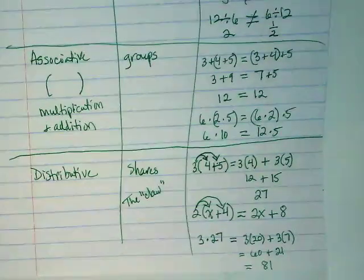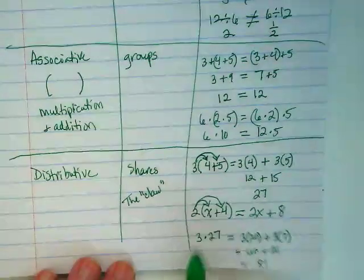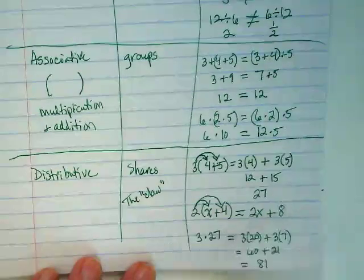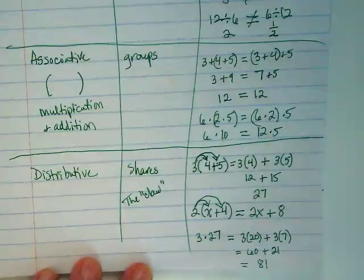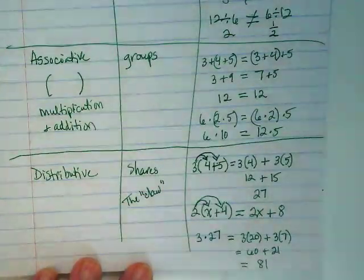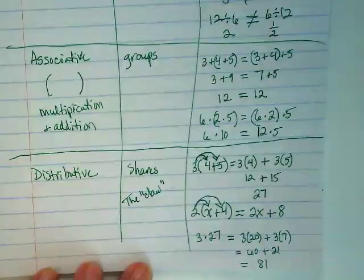What I did is I took a number and broke it into its place values, then distributed the smaller number to both of those. Does that make sense?